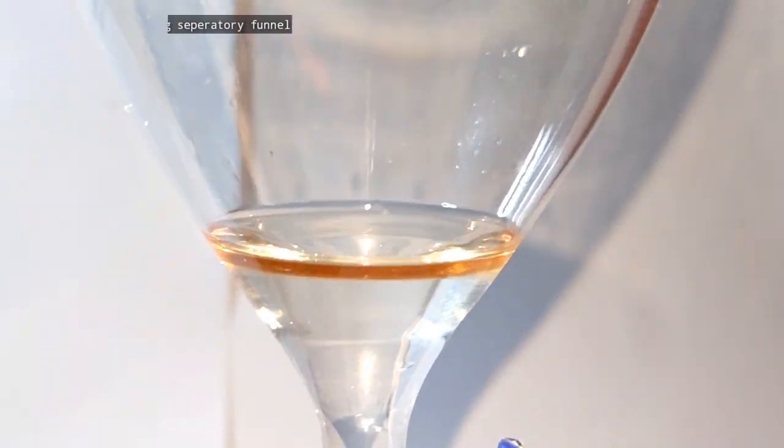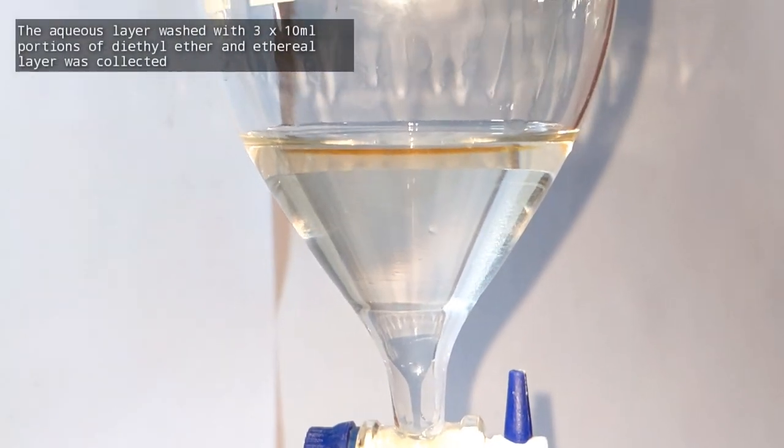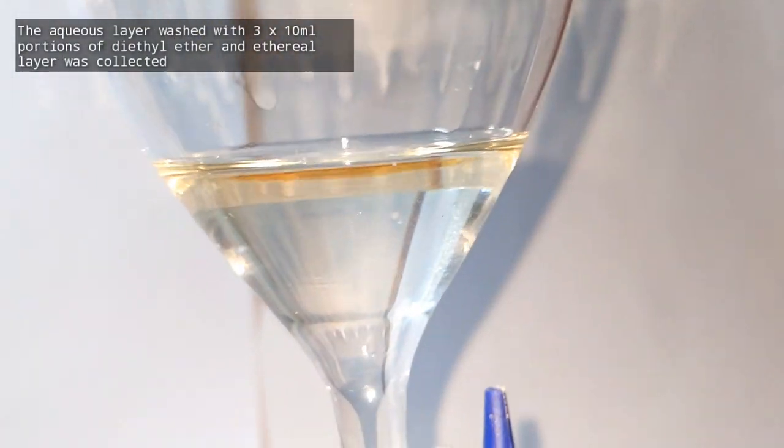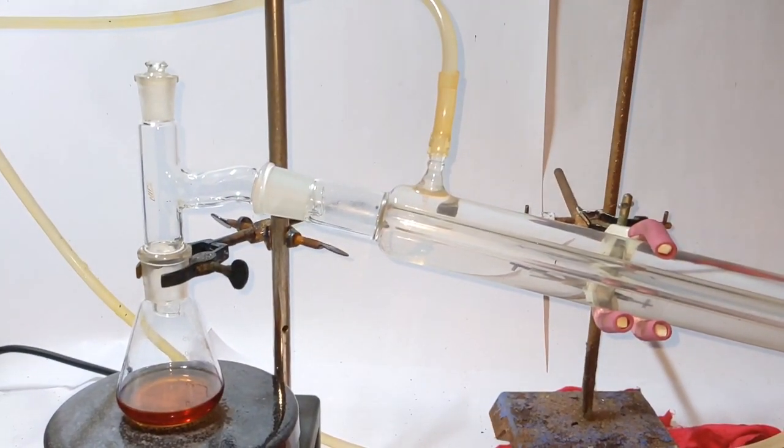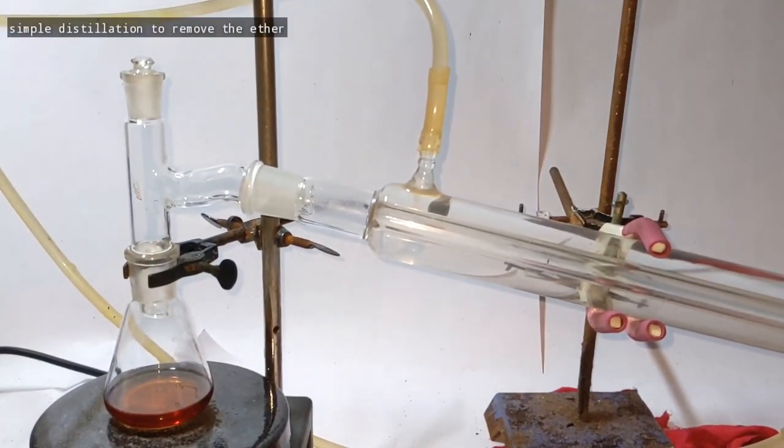And now we are separating the amine from the aqueous phase. Again the aqueous phase was washed three times with 10 ml portions of diethyl ether and that was also added to the Erlenmeyer flask.